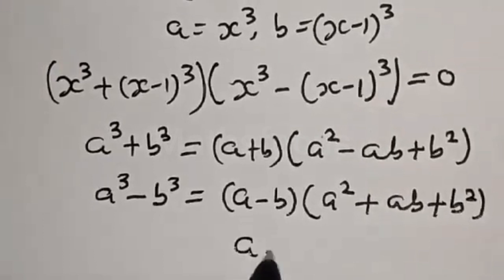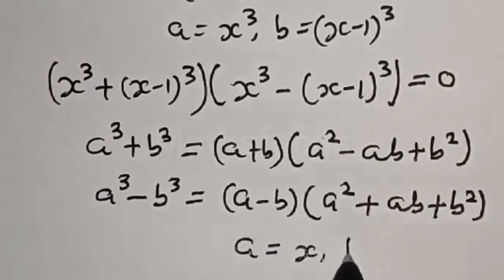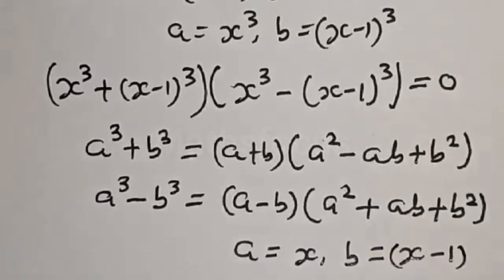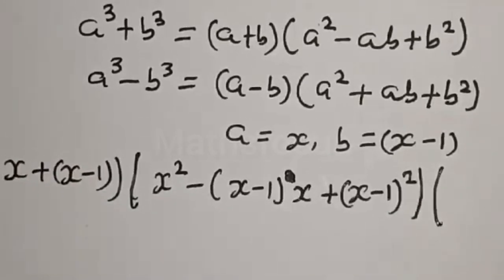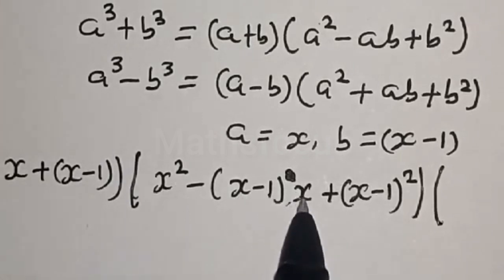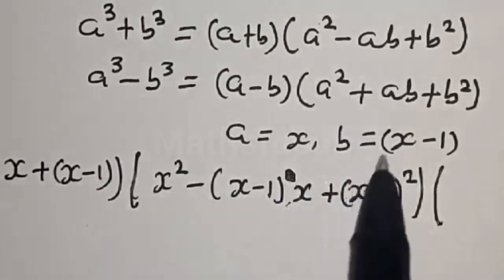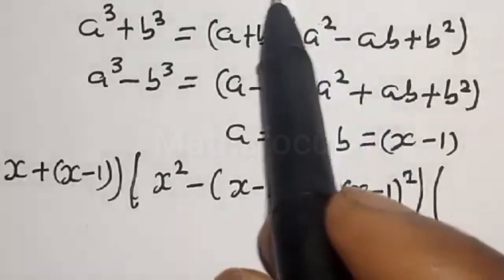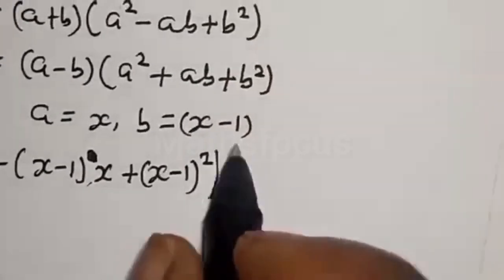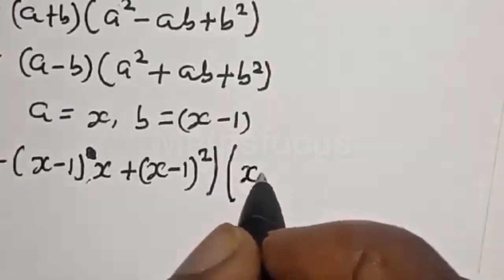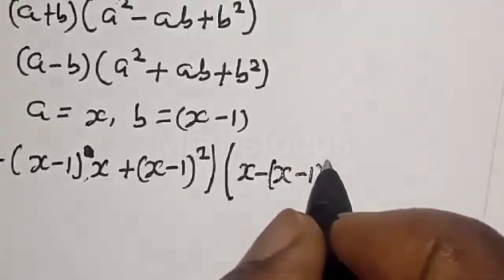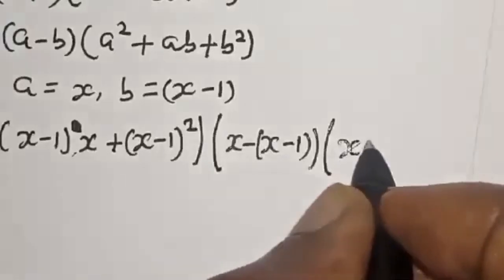In this case, a is equal to x and b is equal to x minus 1. Let's substitute. We have x squared minus x minus 1 multiplied by x — that is ab — then plus x minus 1 squared. Then x minus 1 multiplied by x squared.